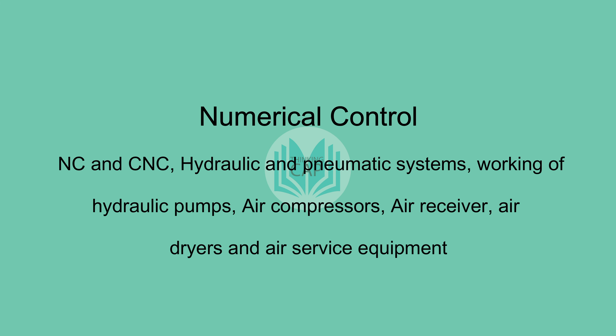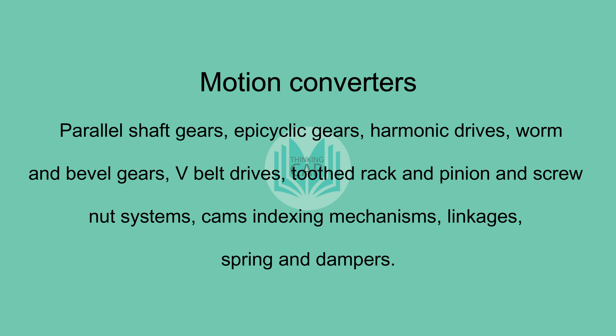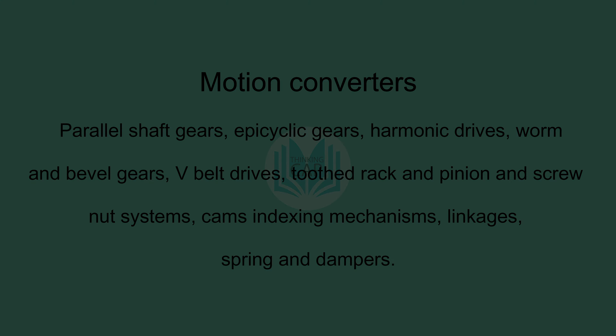The numerical control section covers: working of hydraulic pump, air compressors, air receiver, air dryers and air service equipment. Motion converters include: parallel shaft gears, epicyclic gears, harmonic drives, worm and bevel gears, V-belt drives, tooth rack and pinion, screw nut system, cams, indexing mechanisms, linkage, springs and dampers.